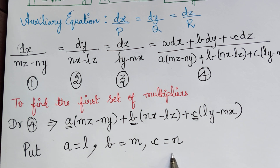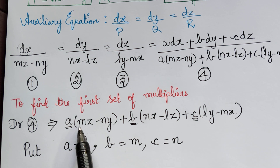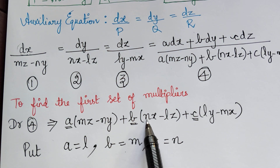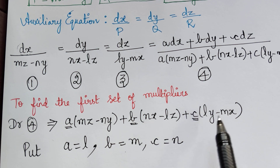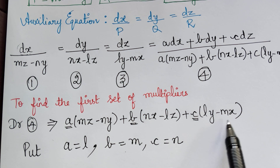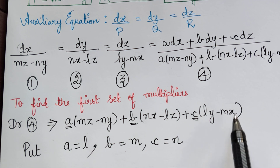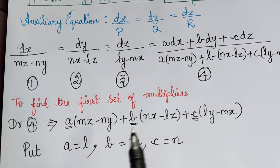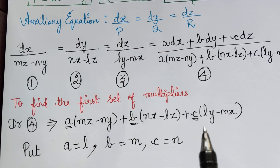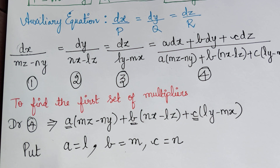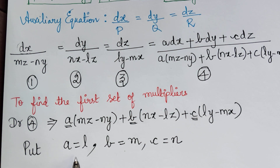I am going to choose the multipliers as a equal to l, b equal to m and c equal to n, and check whether the denominator can be made 0. The reasoning is: looking at the denominator terms containing m, n, l, n, and l, m, choosing l, m, n may allow cancellation. Choosing the right set of multipliers can only be done by practice — the more problems you practice, the easier it becomes to identify the multipliers.